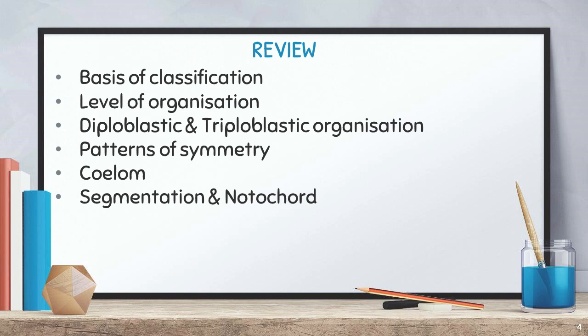We also covered embryonic layers. Based on embryonic layers, organisms are classified as diploblastic and triploblastic. Diploblastic organisms consist of only two layers — ectoderm and endoderm — while triploblastic organisms consist of three layers: ectoderm, mesoderm, and endoderm. The third basis was patterns of symmetry — radial symmetry and bilateral symmetry.